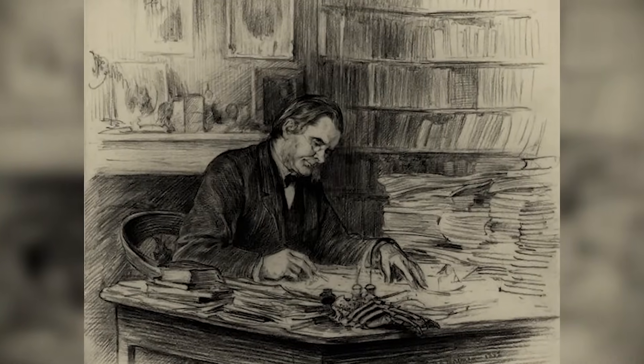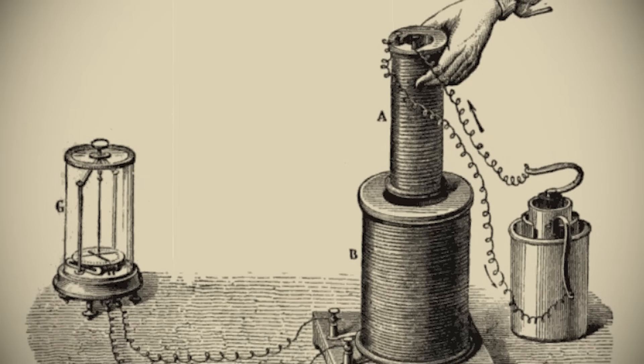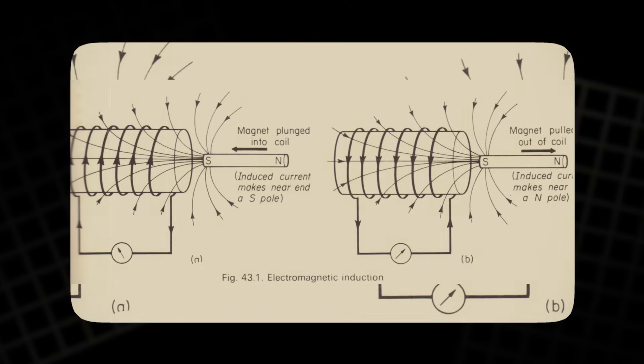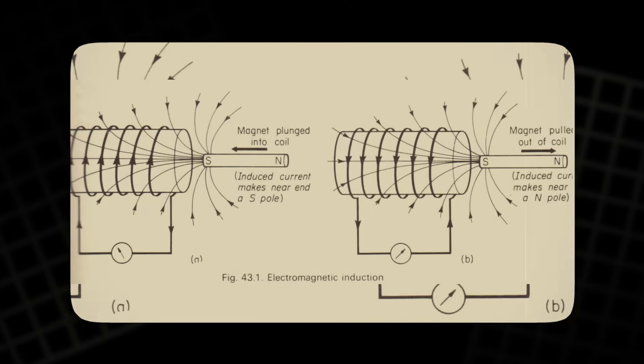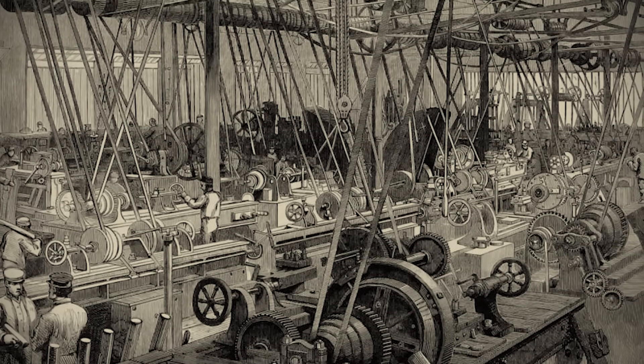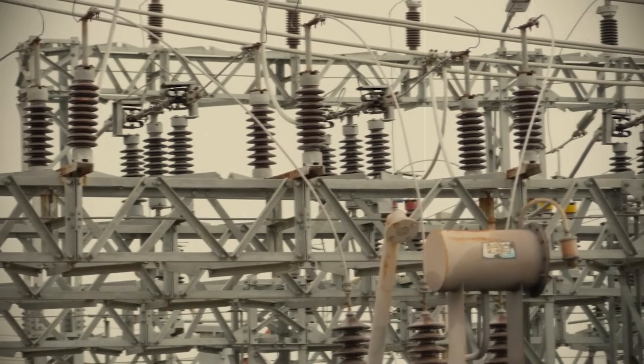In the 1830s, Faraday made a chance observation while conducting an experiment involving a bar magnet and a coil of wire. This simple experiment led to the discovery of electromagnetic induction, a phenomenon that would form the cornerstone of much of the modern electrical technology that powers our world today.